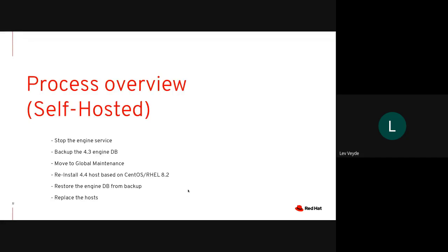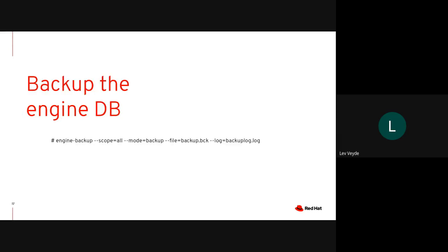Next, we'll go over the self-hosted engine upgrade. It is similar to the standalone upgrade we covered before, and some steps are the same: stop the engine, backup the engine, then move to global maintenance and reinstall the new host with 4.4. The backup step uses the same tool, but the restoration step is actually combined with the hosted engine deploy part.